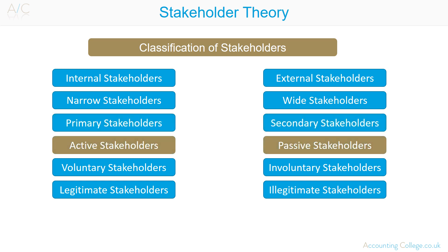Active and passive stakeholders is a classification used to describe the level of interest a stakeholder has in the business. Active stakeholders seek to actively participate in the business activities, for example employees, pressure groups, regulators, suppliers and so forth. Passive stakeholders do not seek to participate in the organisation's activities, for example government, customers, etc.